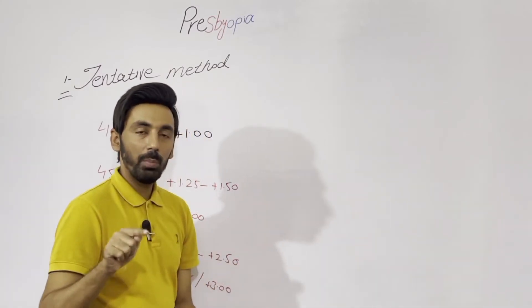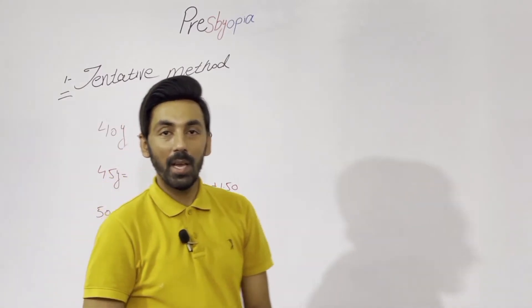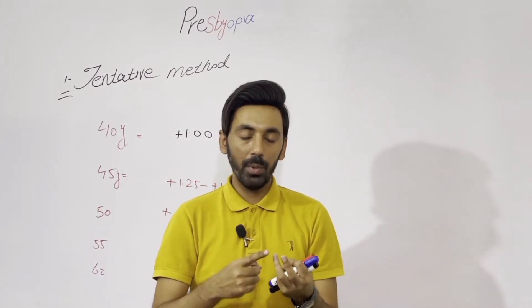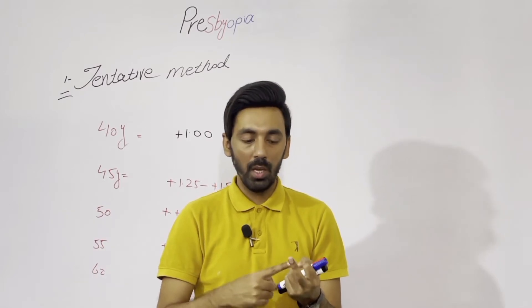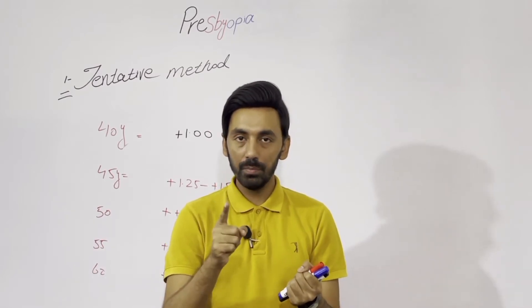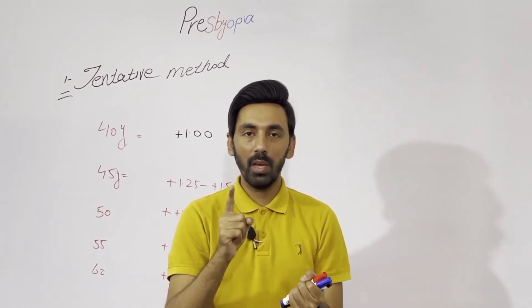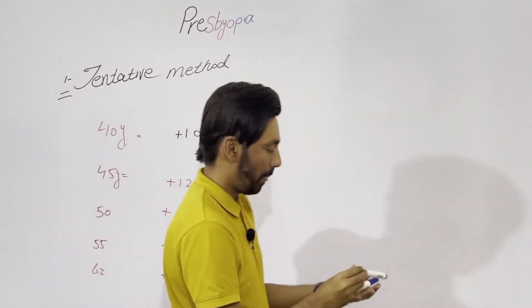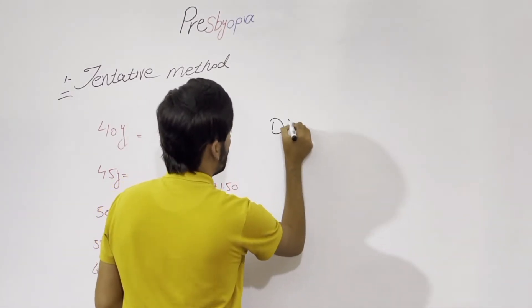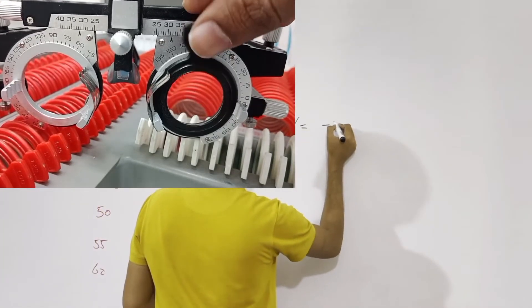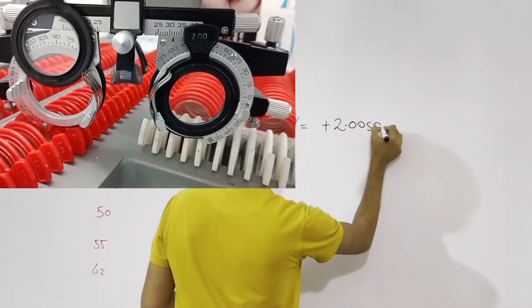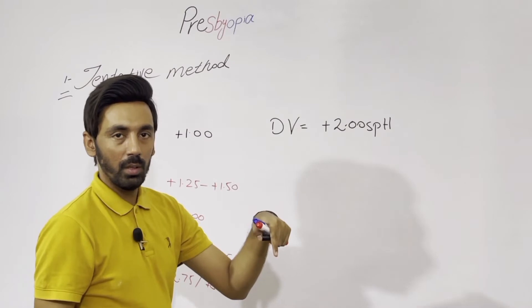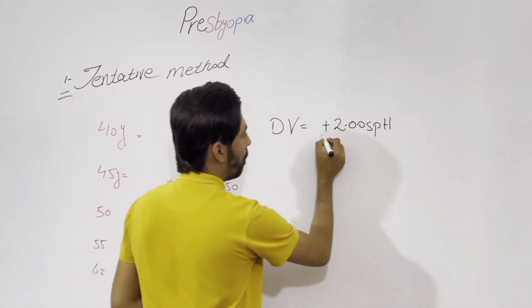Make sure your patient is 6/6. If the patient has any refractive error — myopia, hypermetropia, or astigmatism — correct it at distance first, and then prescribe the near add. For example, if the distance correction of a patient is plus 2.00 spherical in both eyes, first place plus 2.00 before both eyes.